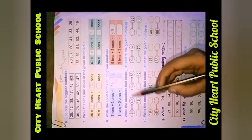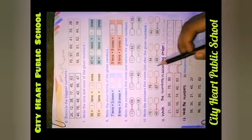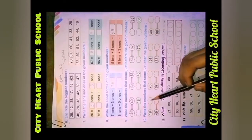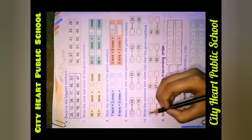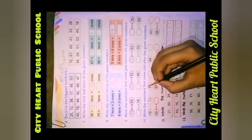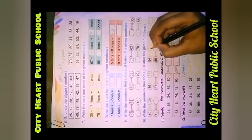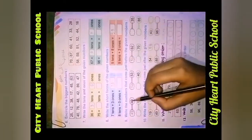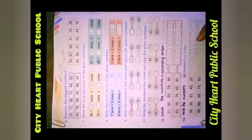Then coming to question number 10: Write the number that comes just after the given number. Yeh just question number 9 ka opposite hai. Jitne bhi numbers diye hue hain, unke just baad mein kya aata hai, aapko yeh likhna hai. So nineteen ke baad twenty. Seventy six ke baad seventy seven. Fifty four ke baad fifty five. Before matlab pehle, after matlab baad mein.